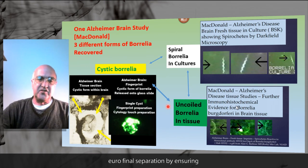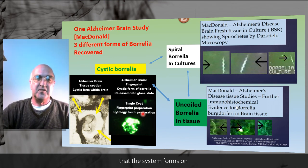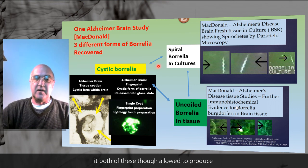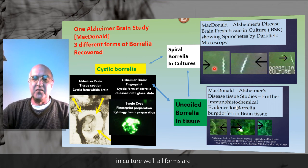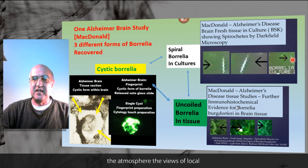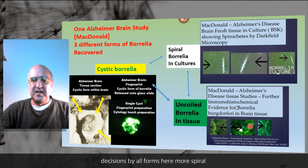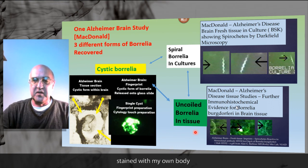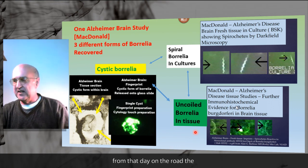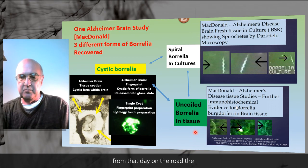Here is a final summary slide showing that the cystic forms, if allowed to reproduce in culture, will form spiral forms. The spiral forms could be any spirochete, but with the use of monoclonal antibody H5332, which is specific for Borrelia burgdorferi, you can see the spiral forms stained with monoclonal antibody — some more spiral than others — definitively proving that they are Borrelia burgdorferi.